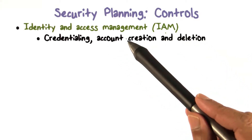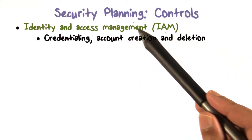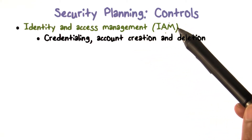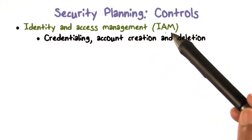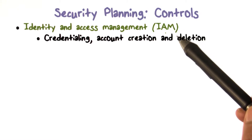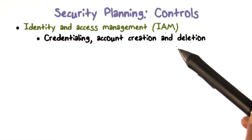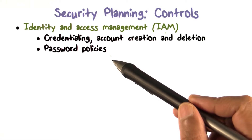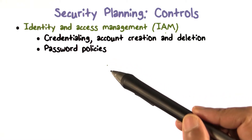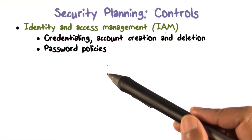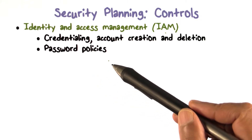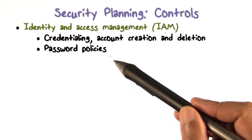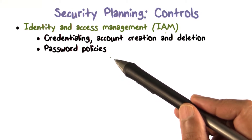Credentialing is essentially deciding what someone needs to show up with to prove who they are. Based on that, they create an account and decide what kind of access should be granted. Using passwords, for example, you may have password policies — how long the password has to be, how frequently it has to be changed. Some places may have multi-factor authentication, requiring a token in addition to a password.